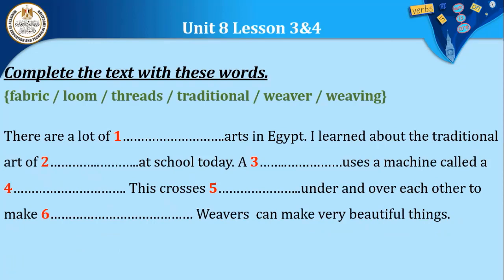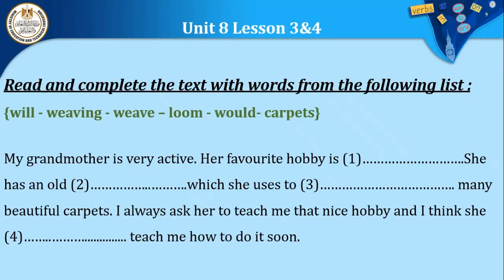Complete the text with these words: fabric, loom, threads, traditional, weaver, weaving. 'There are a lot of arts in Egypt. I learned about the traditional art of weaving at school today. A weaver uses a machine called a loom. This crosses threads under and over each other to make fabric. Weavers can make very beautiful things.' Next exercise — complete with: weaving, weave, loom, wood, carpets. 'My grandmother is very active. Her favorite hobby is weaving. She has an old loom which she uses to weave many beautiful carpets. I always ask her to teach me that nice hobby and I think she will teach me how to do it soon.'